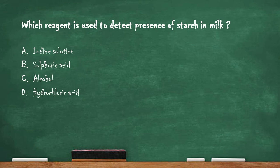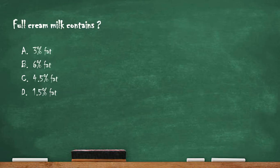The first question is: which reagent is used to detect presence of starch in milk? Option A: iodine solution. Option B: sulfuric acid. Option C: alcohol. Option D: hydrochloric acid. The right answer is option A — iodine solution is used to detect the presence of starch in milk.